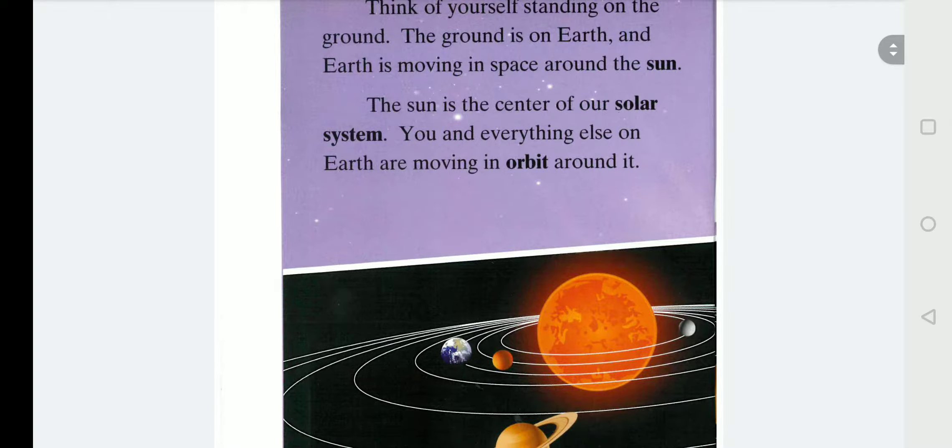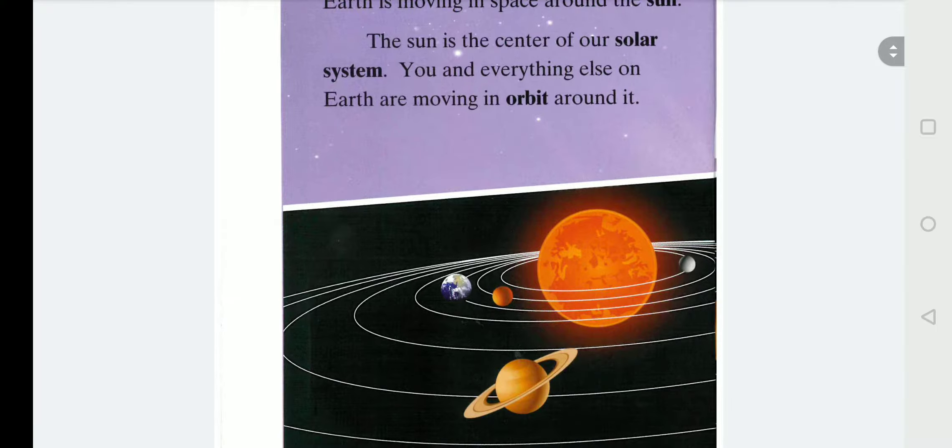The sun is at the centre of our solar system. You and everything else on Earth are moving in orbit around it. Orbit is when you go around.